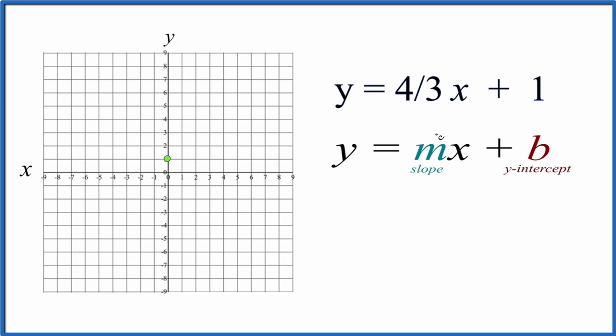For the slope, that's m. That's four-thirds. You can think of it as rise over run. So we rise four, we run three. We go to our y-intercept, we rise one, two, three, four, and we go over one, two, three.